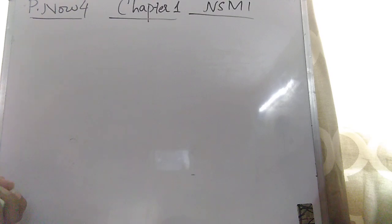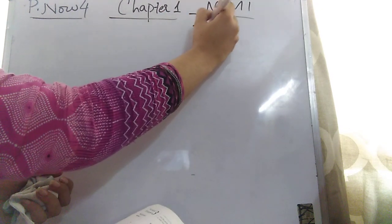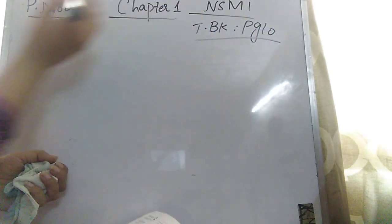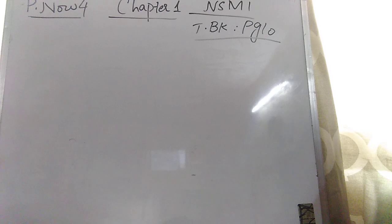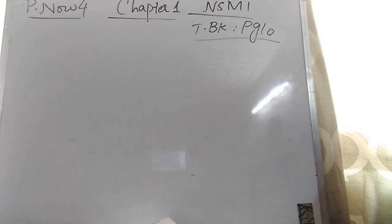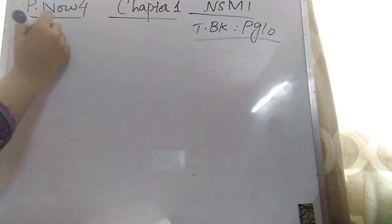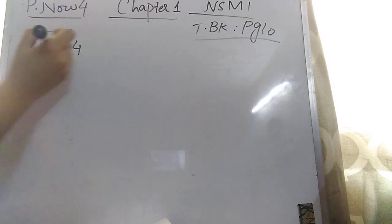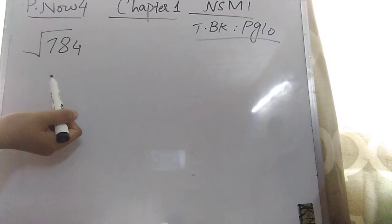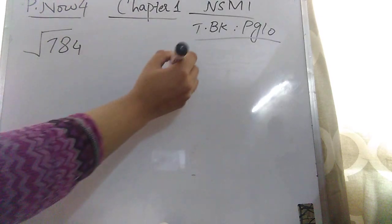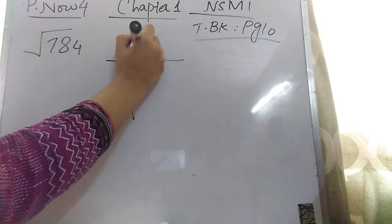Practice Now 4, textbook page number 10. The question is: find the square root of 784 by using prime factorization. We have to find the square root of 784. To do that, we first need to find the prime factors of 784.